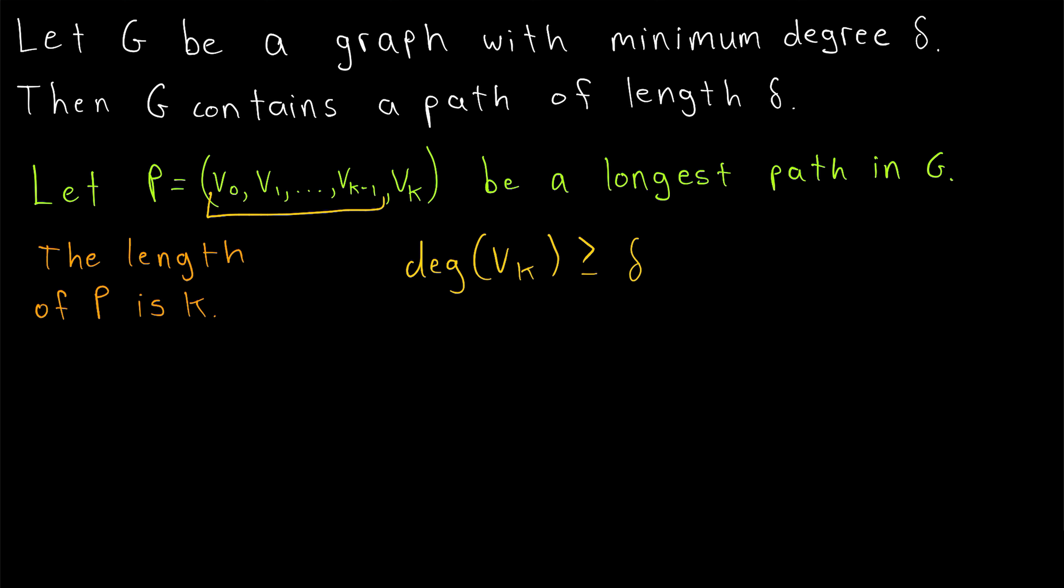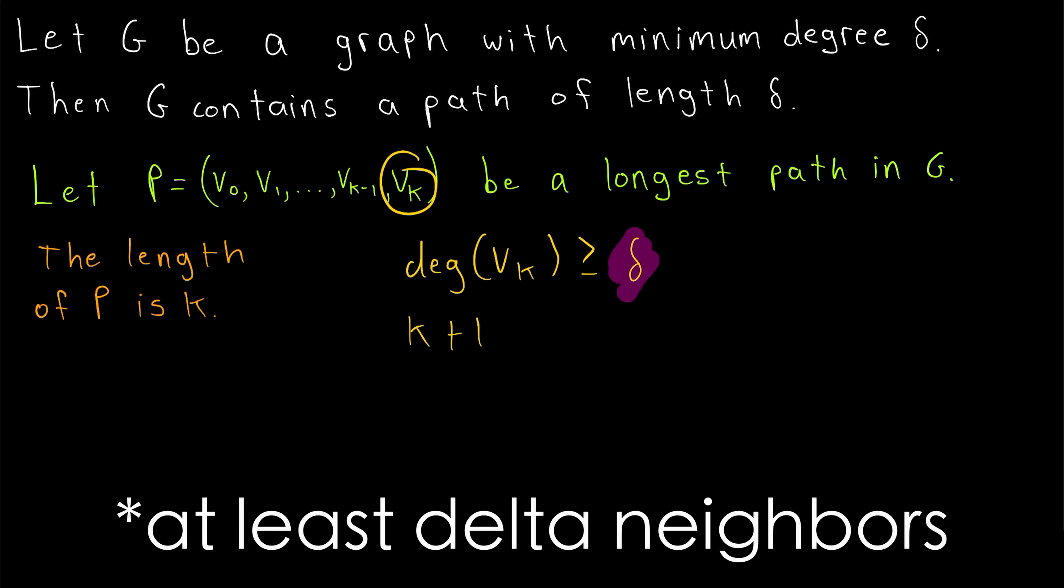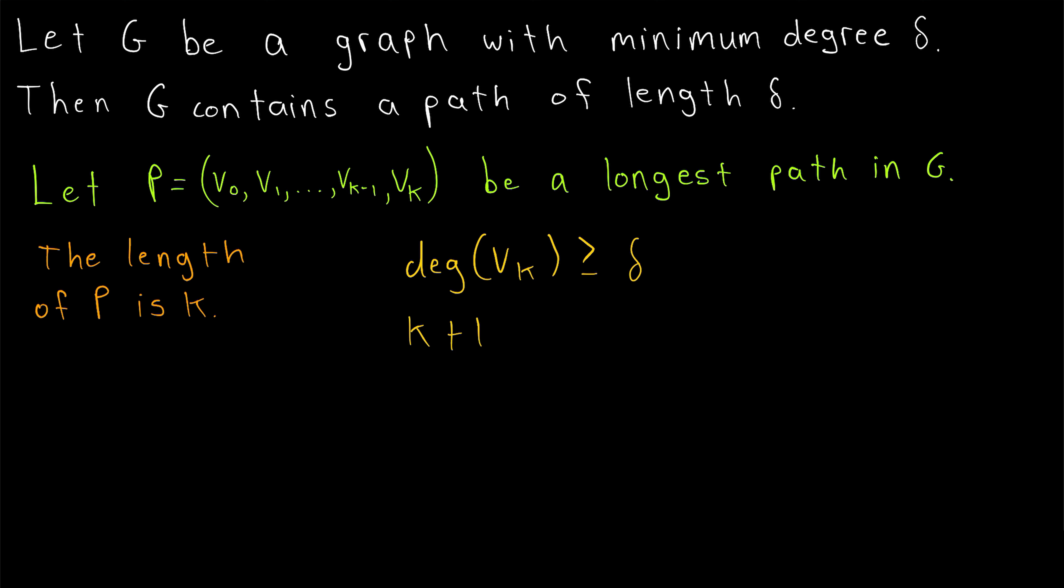How many other vertices are there on the path besides vk? Well, from v1 to vk is obviously k vertices, and then we've also got v0. So in total, there are k plus 1 vertices on the path. Since we don't want to consider vk, since it can't be one of its delta neighbors, there are a total of k plus 1 minus 1, or just k vertices on the path other than vk.